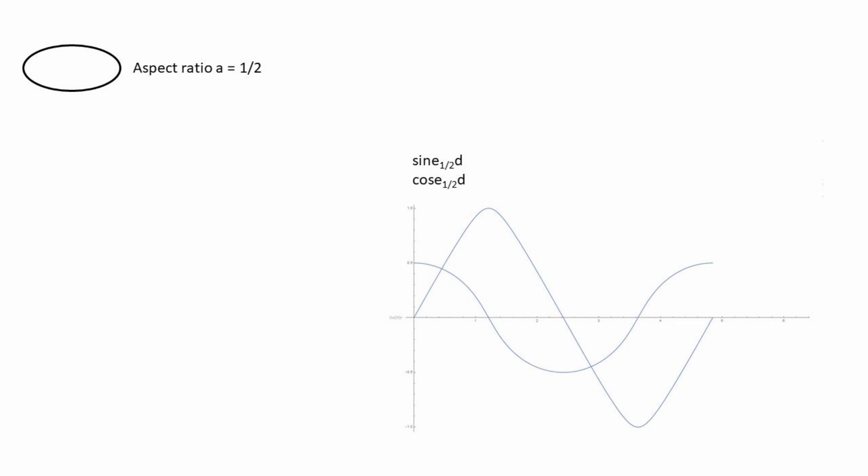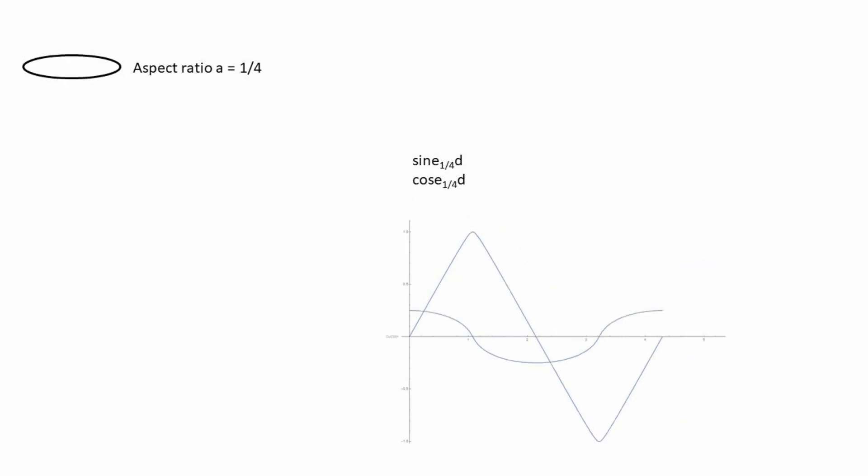Here's the same for an ellipse of aspect ratio 1 half. You can see that cosy curve only goes up to the aspect ratio and the shape is not at all like sine and cos. Here's sine and cosy for aspect ratio 1 quarter.